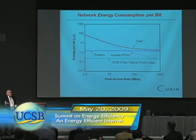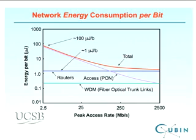It's useful to think about the Internet in terms of energy consumed per bit of data transmitted. In today's network at 3 megabits per second, routers consume about 1 microjoule per bit, and the total energy consumption of the network is about 100 microjoules per bit. If you send a bit of data from one place on Earth to another, it consumes about 100 microjoules — consistent with the energy consumed for a Google search operation.